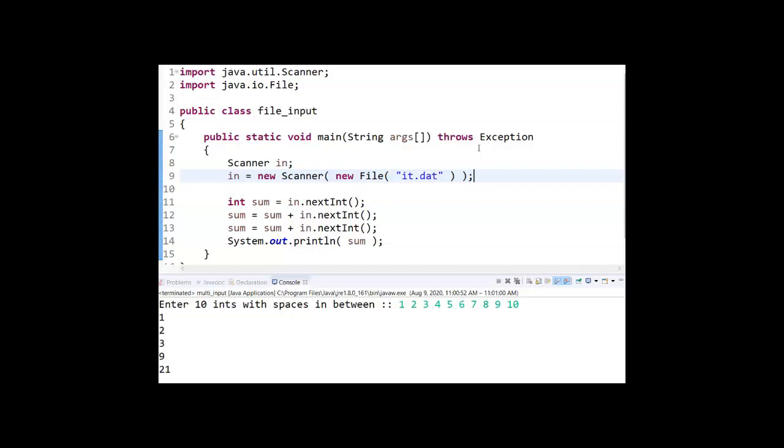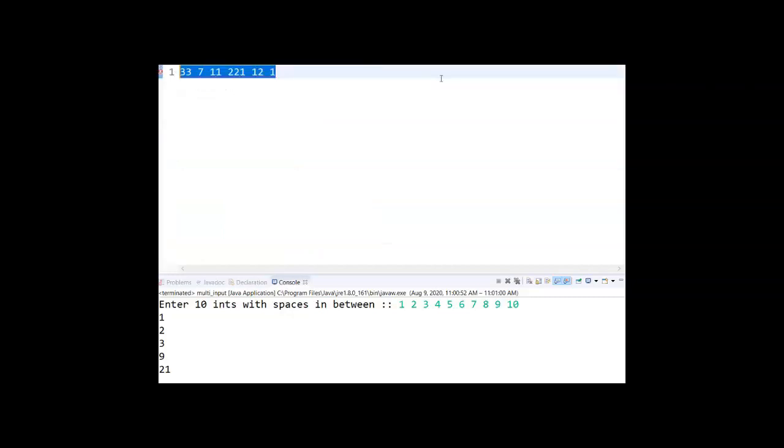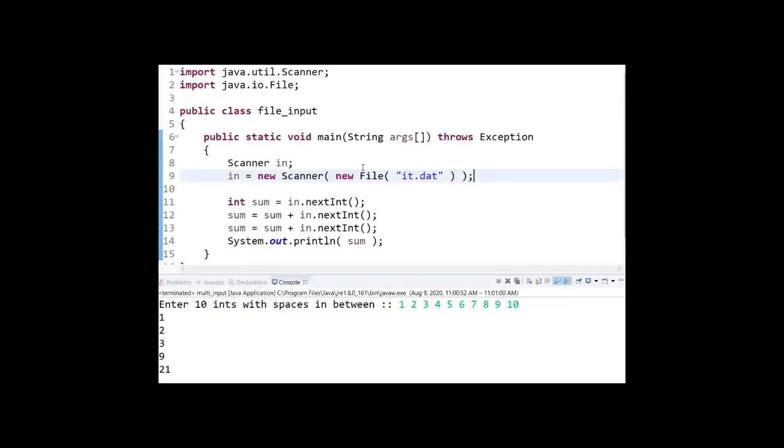In this case, we're connecting it to a file. The file's called it.dat, and in that file, I have 33, 7, 11, 2, 21, 12, and 1. So in my example, I'm just going to read in the first three values and sum them up. So let's run that.